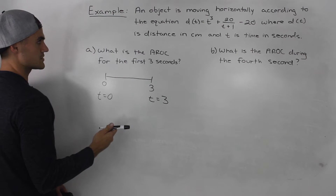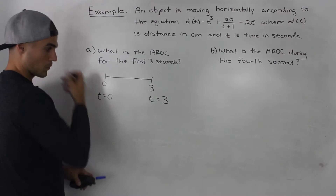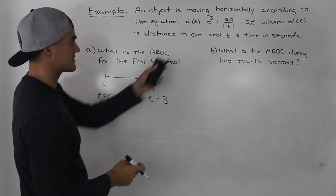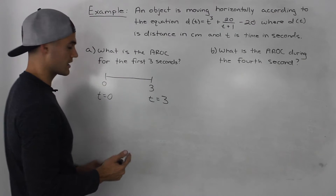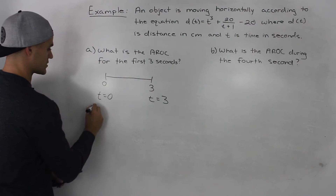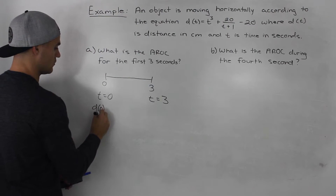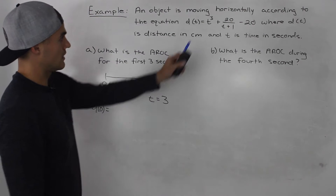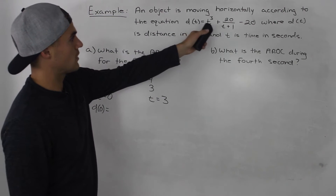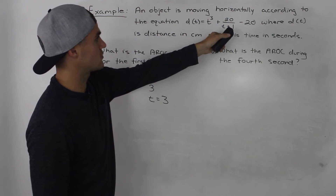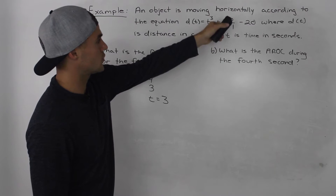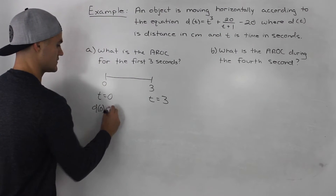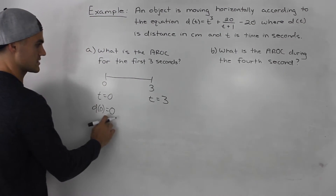The first thing to do is figure out the distances at these times. If we plug in 0 for t into the equation, the t³ term is 0, and 20 divided by (0+1) is 20, then minus 20 gives us 0. So d(0) = 0.